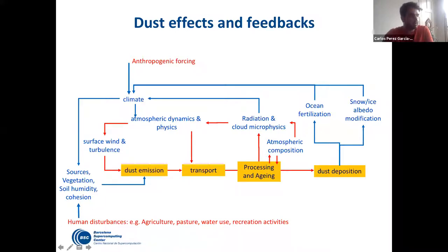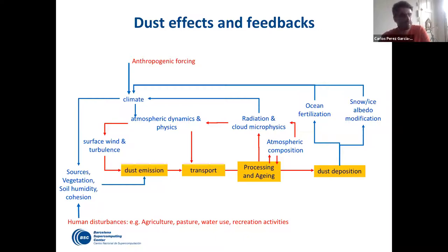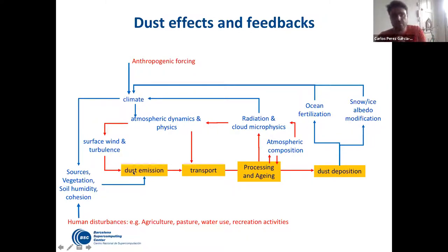We also have to add human disturbances to the sources — for example, through agriculture and pasture. We have sources that are agricultural or perturbed by agriculture, and areas affected by water use and recreational activities that have become dust sources. This is a global picture of what we are facing.